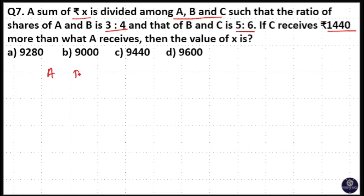So here 3 people A, B, C and Rs. x is divided between these 3. A and B share is 3 is to 4 and B and C share is 5 is to 6. If C receives 1440 more than A, that means difference between A and C is 1440.